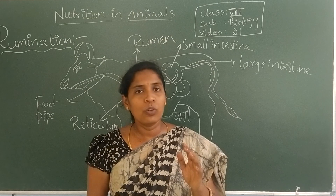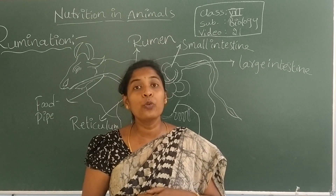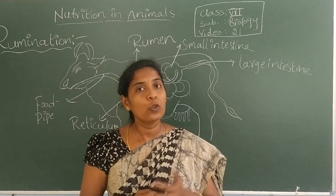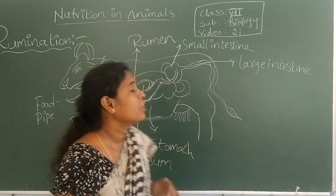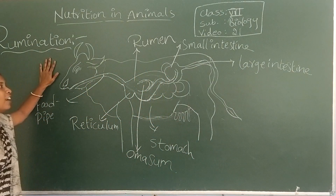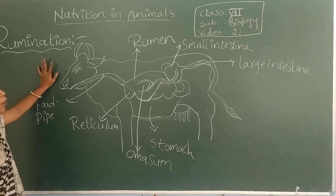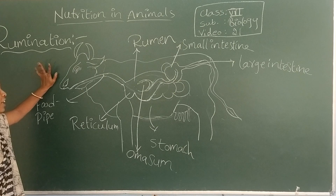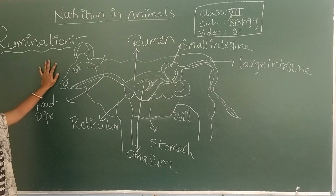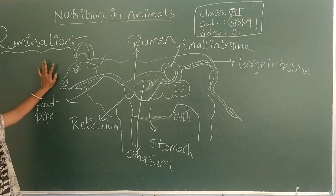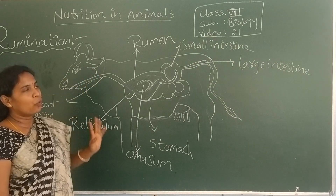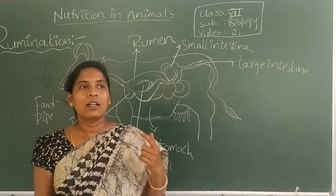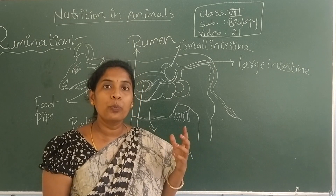What are ruminants? Grass-eating animals are known as ruminants. Why are they known as ruminants? Examples of ruminants include cow, buffalo, sheep, goat, camel, and horse. These are all generally known as ruminants.